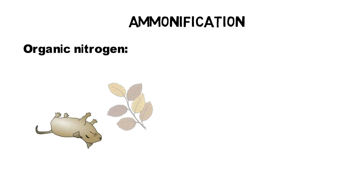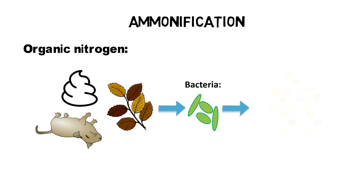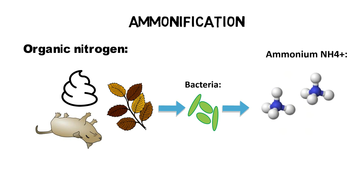When a plant or animal dies, or an animal expels waste, the initial form of nitrogen is organic. Bacteria or fungi convert the organic nitrogen within the remains back into ammonium (NH4+). Therefore, it is important to account for both organic nitrogen and ammonium in the influent of a wastewater treatment plant.